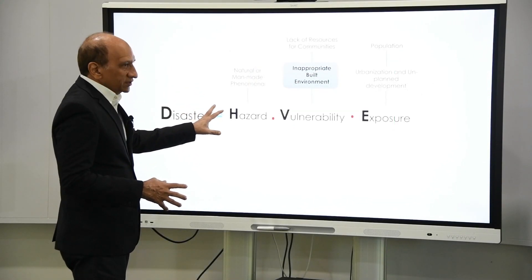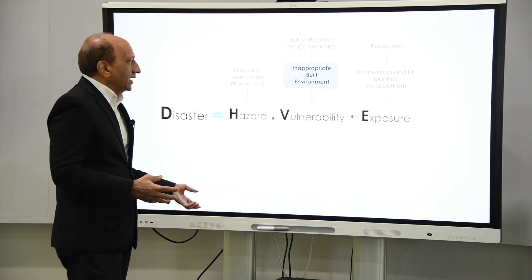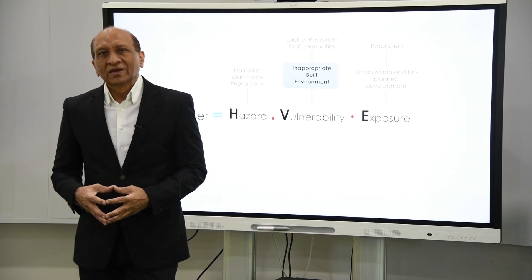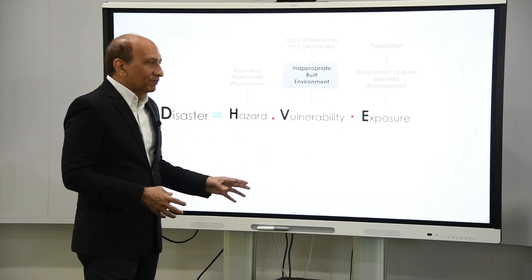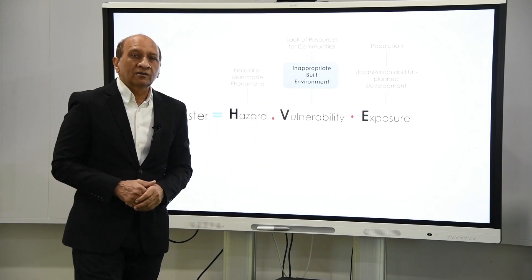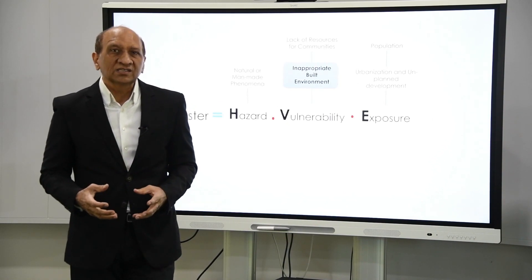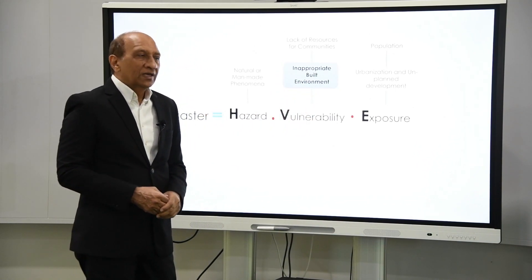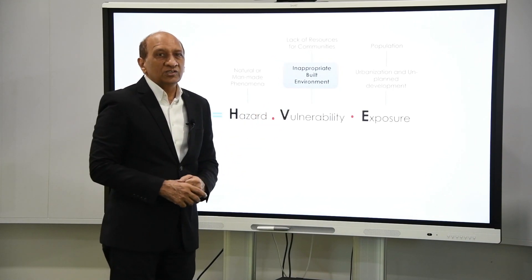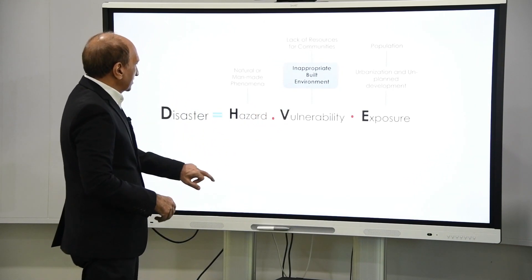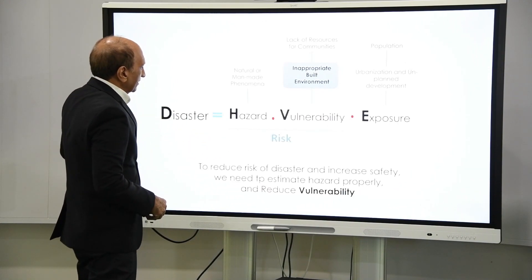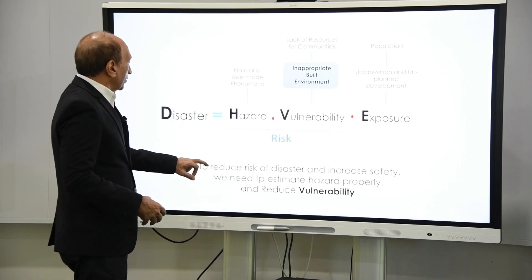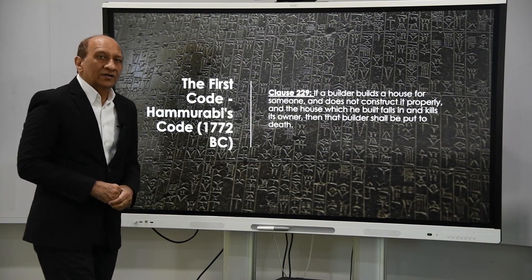We cannot do much about the hazards, though sometimes we can. Exposure we can reduce — we can evacuate buildings or locate them where hazard is low. But most importantly, as structural engineers, we control the vulnerability, meaning the weakness in the structure. That's why safety becomes important. If the structure is safe, then vulnerability will be low, and then the disaster will be low. So we can reduce risk and make the community more resilient.